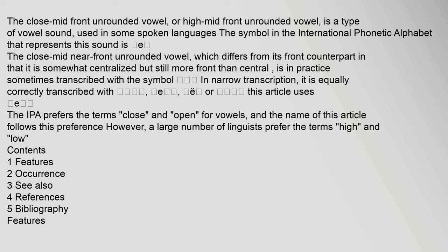The close mid front unrounded vowel, or high mid front unrounded vowel, is a type of vowel sound used in some spoken languages. The symbol in the International Phonetic Alphabet that represents this sound is 'e'. The close mid near front unrounded vowel, which differs from its front counterpart in that it is somewhat centralized but still more front than central, is in practice sometimes transcribed with the symbol in narrow transcription; it is equally correctly transcribed with 'e', 'e' diaeresis, or this article uses 'e'. The IPA prefers the terms close and open for vowels, and the name of this article follows this preference; however, a large number of linguists prefer the terms high and low.